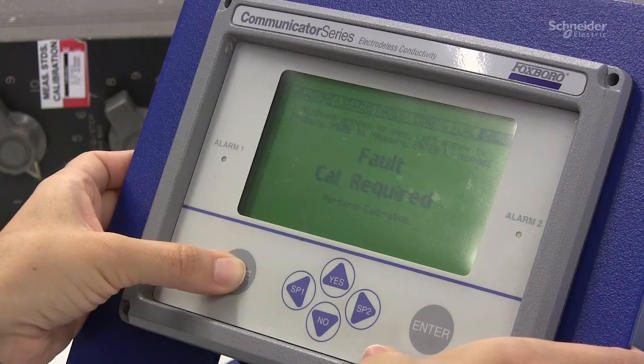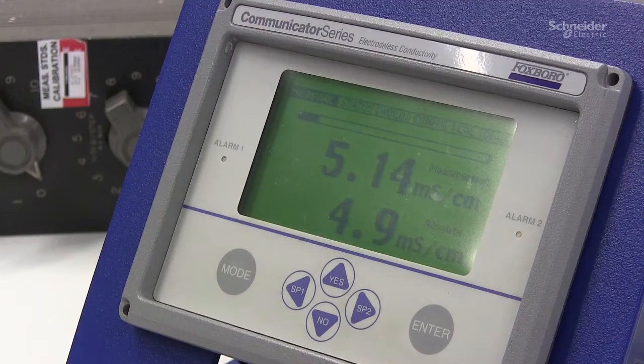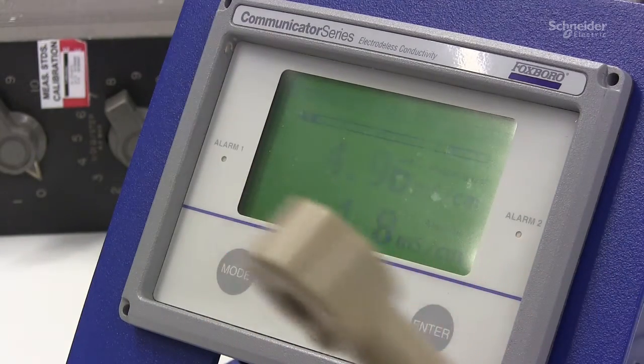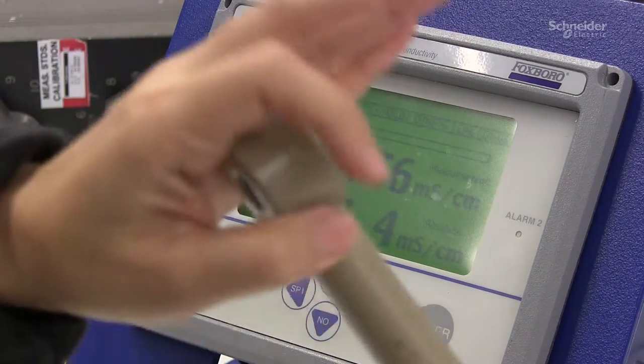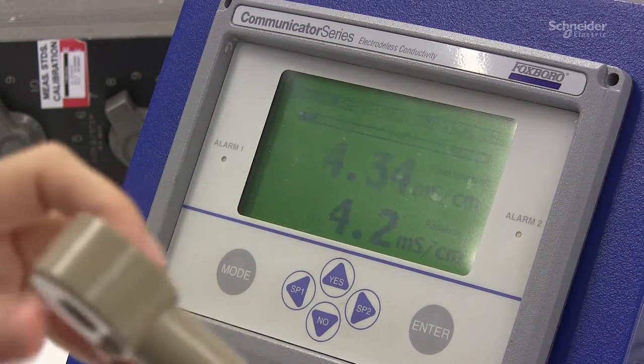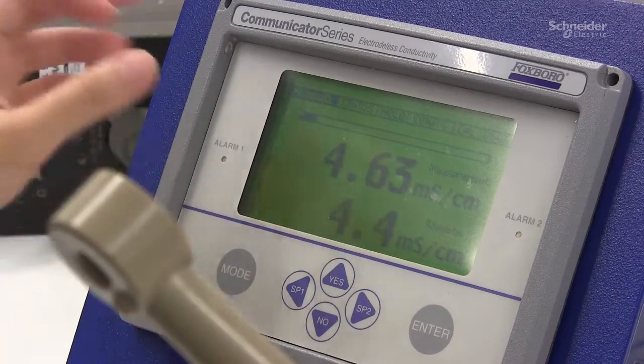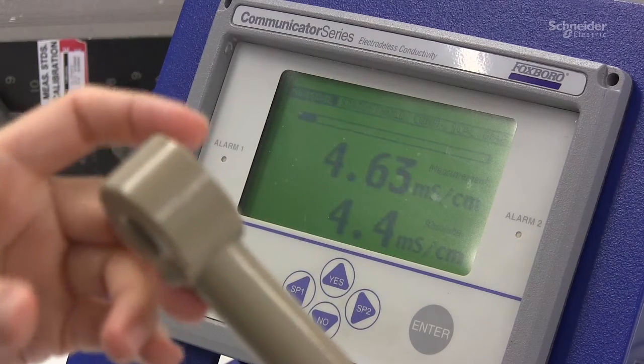So press mode again to go back to measure mode. If you see right now we have the sensor on the bench with nothing connected to it which should be giving us a clear zero and it's not, it's deviated. So we will proceed with the calibration now.